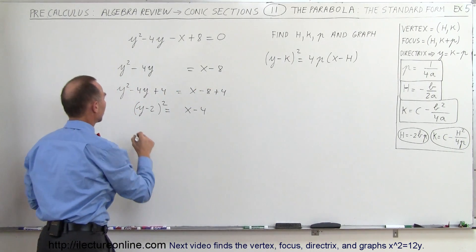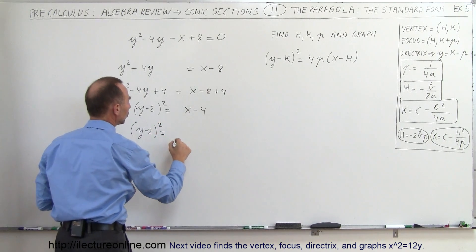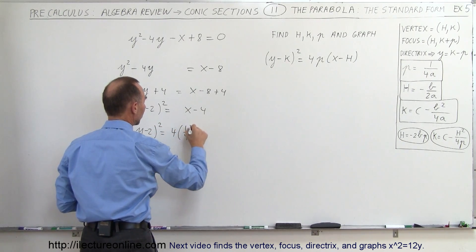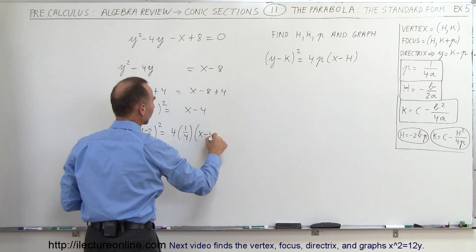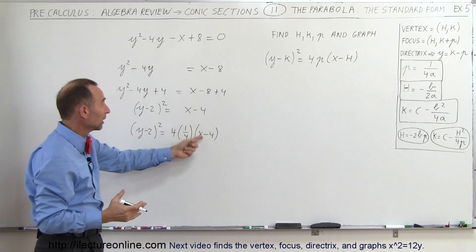So we can go ahead and do that. We have (y - 2)² is equal to 4 times 1/4 times (x - 4). So you can see that 4 times 1/4 gives me 1 again, leaves me with x - 4.